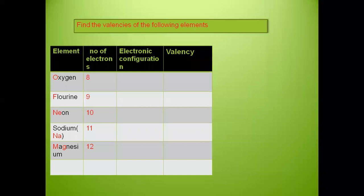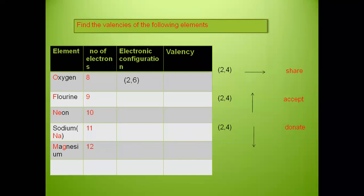Let's quickly see the electronic configuration and valencies. Oxygen's electronic configuration is 2,6. Since there are more than 4 electrons in the last shell, to achieve the octet it will accept two electrons. Therefore the valency of oxygen is 2.